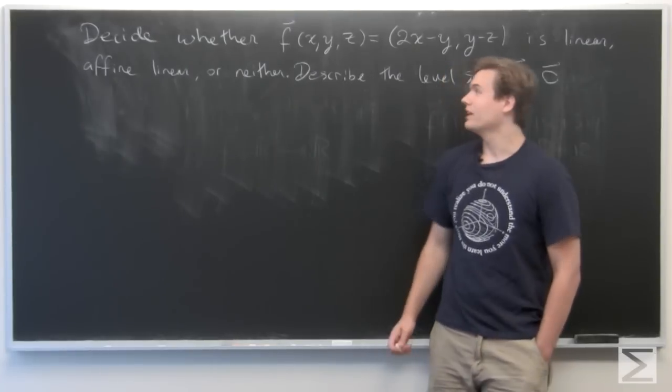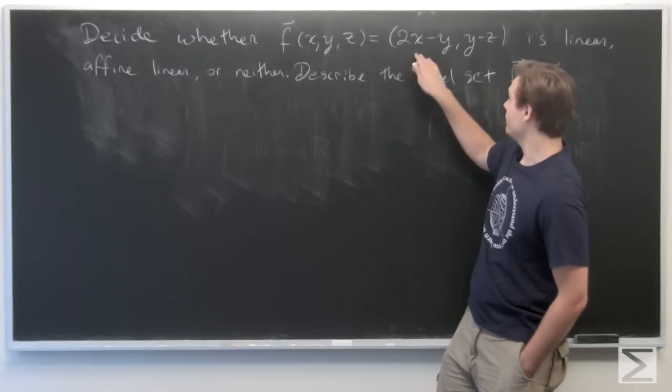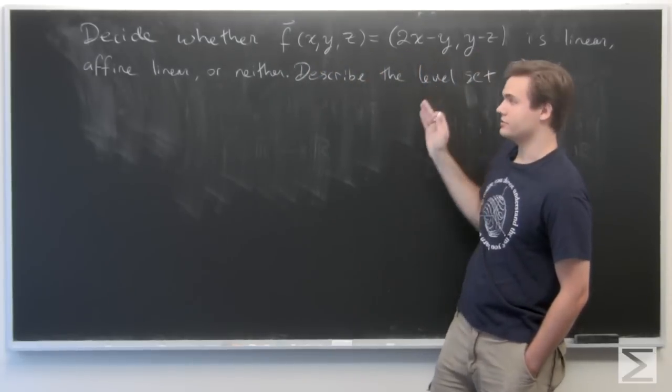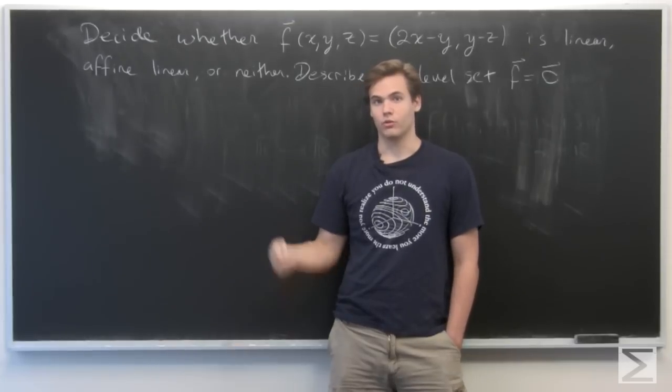In this problem, we're given a function f(x, y, z) equals 2x minus y, y minus z. We want to determine whether or not f is linear, affine linear, or neither.